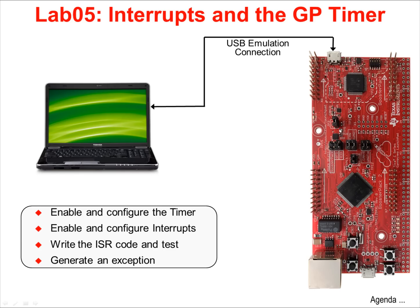In Lab 5, we'll use the general purpose timer to count down from a preset value. When the timer reaches zero, an interrupt will be generated and the timer will be reloaded. The NVIC on the Teva C-series device will then find the correct address of the interrupt service routine you've written and execute it. These are all real-world skills that you'll need over and over again when working with any microcontroller.